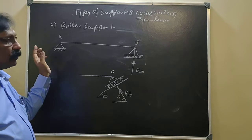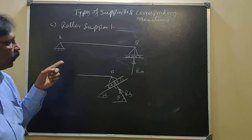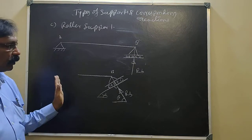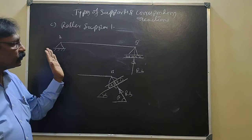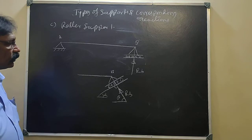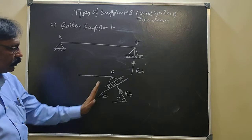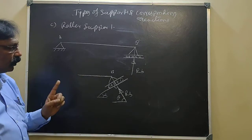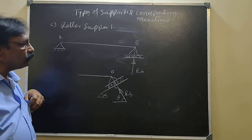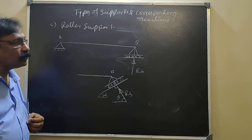So far we have discussed the types of loads and where they are concentrated, the types of supports, and the corresponding reactions that develop. For simply supported beams the reactions are vertical. At the hinge support there are two components. At the roller support there is always only one reaction, normal to the surface of the roller. Now we will start with the numericals on this chapter.